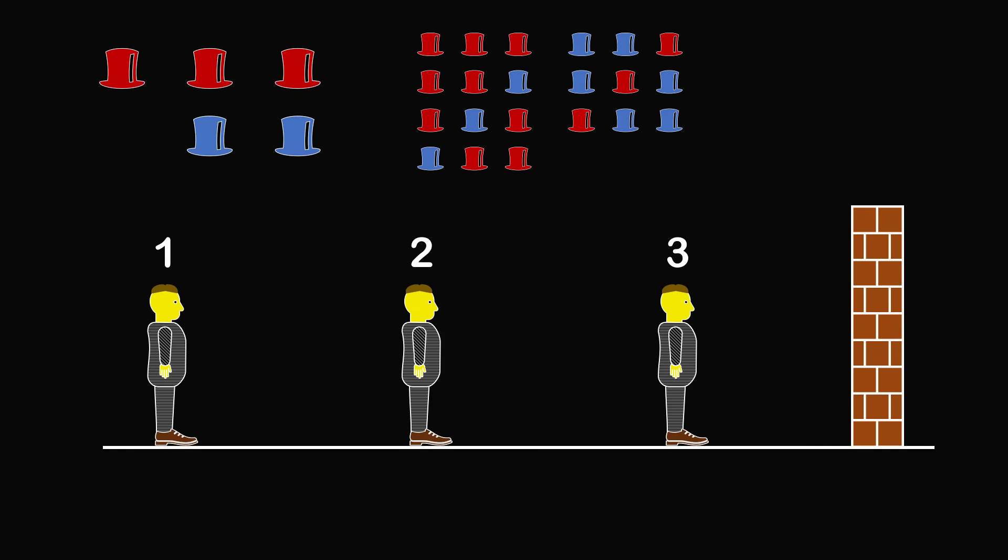But the other 7 possibilities are possible ways that we could pick 3 hats from 3 red hats and 2 blue hats.